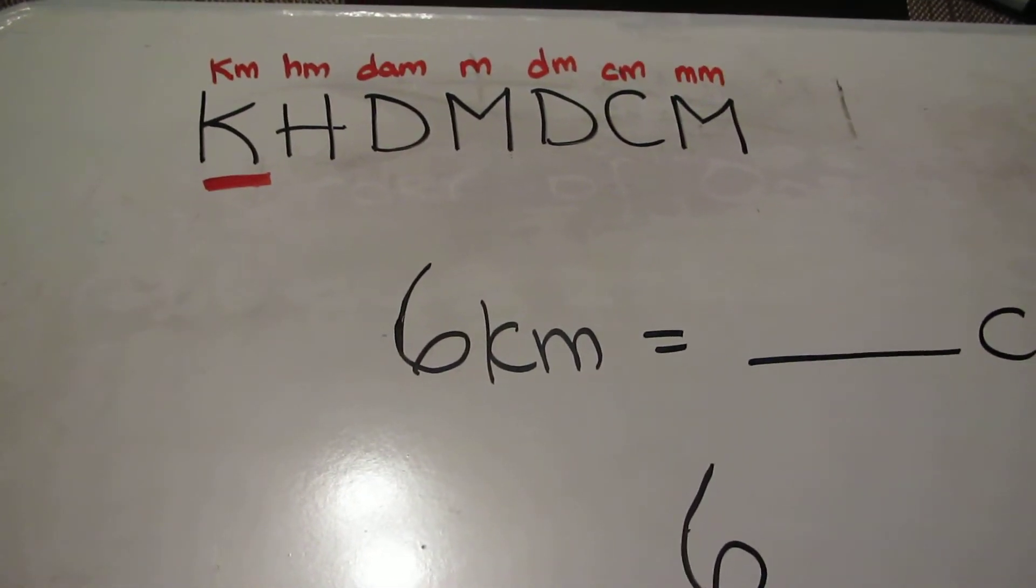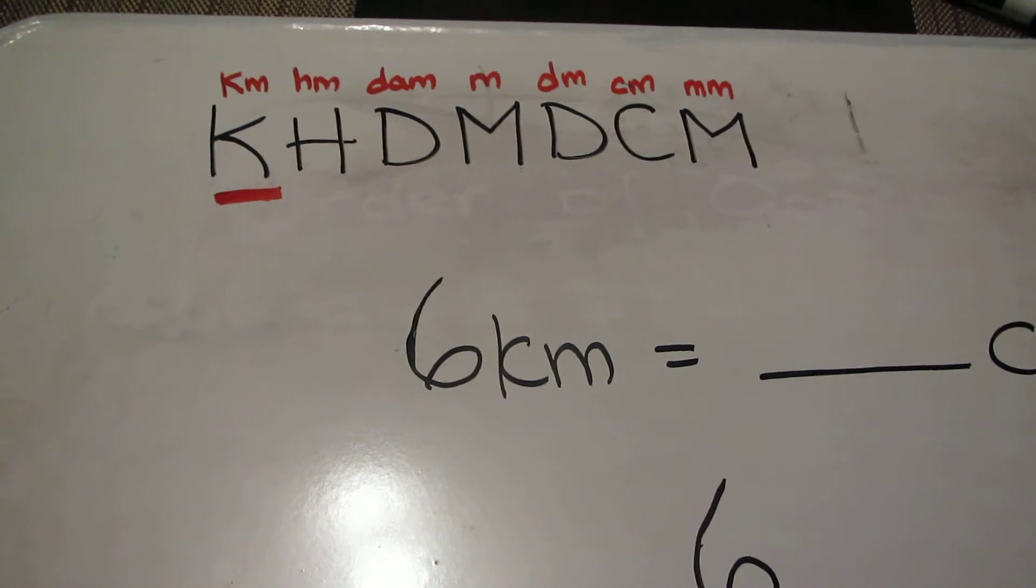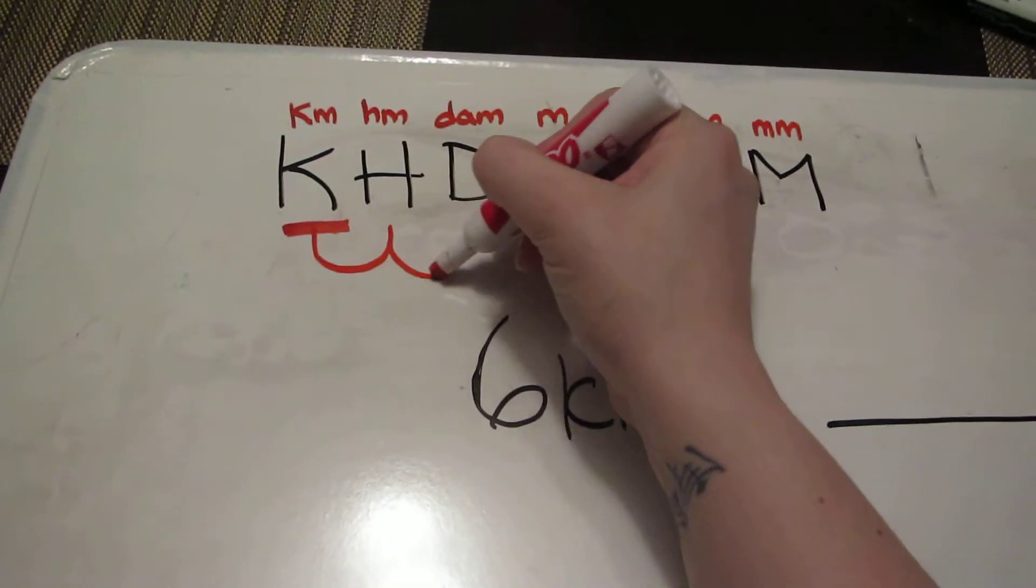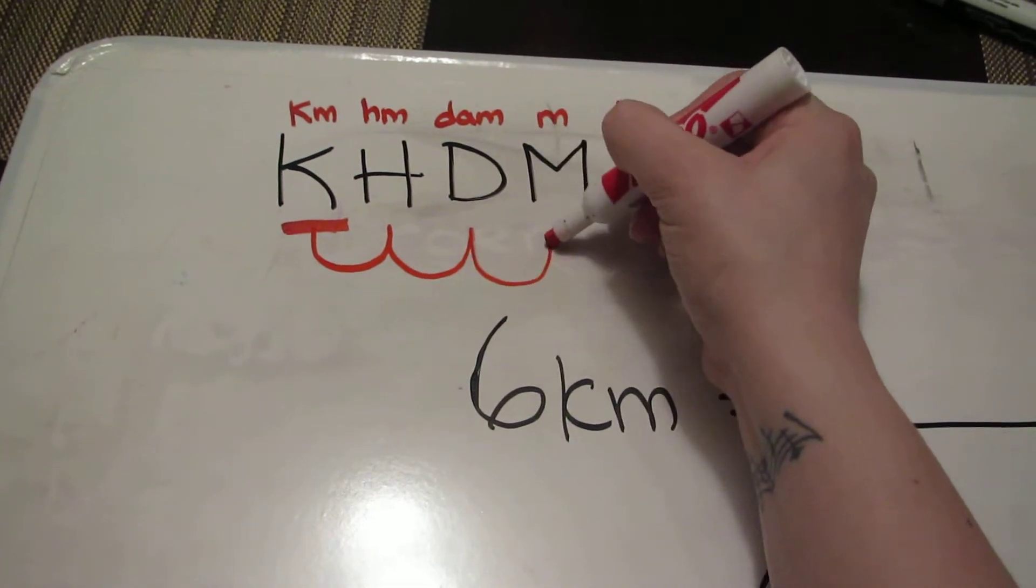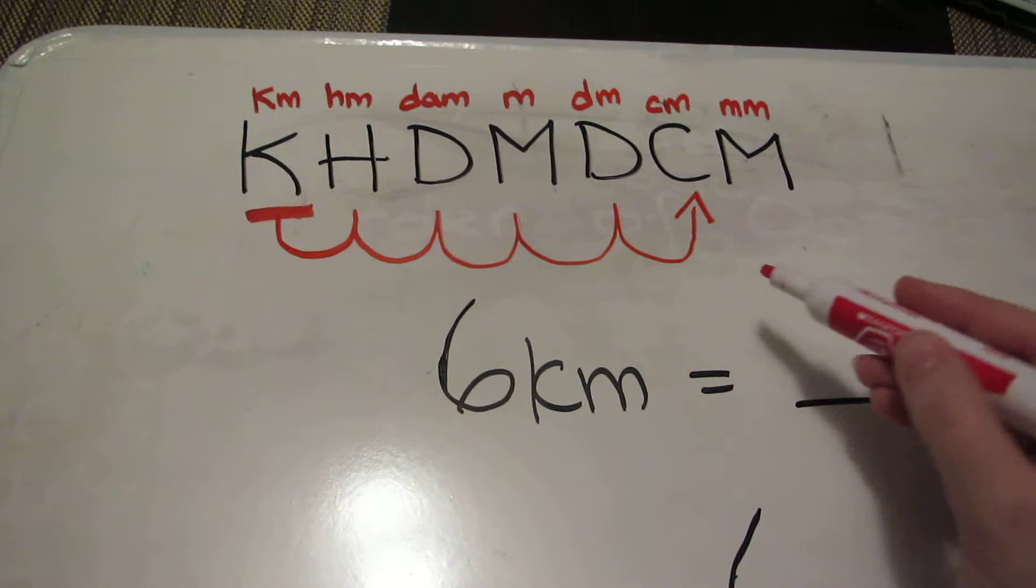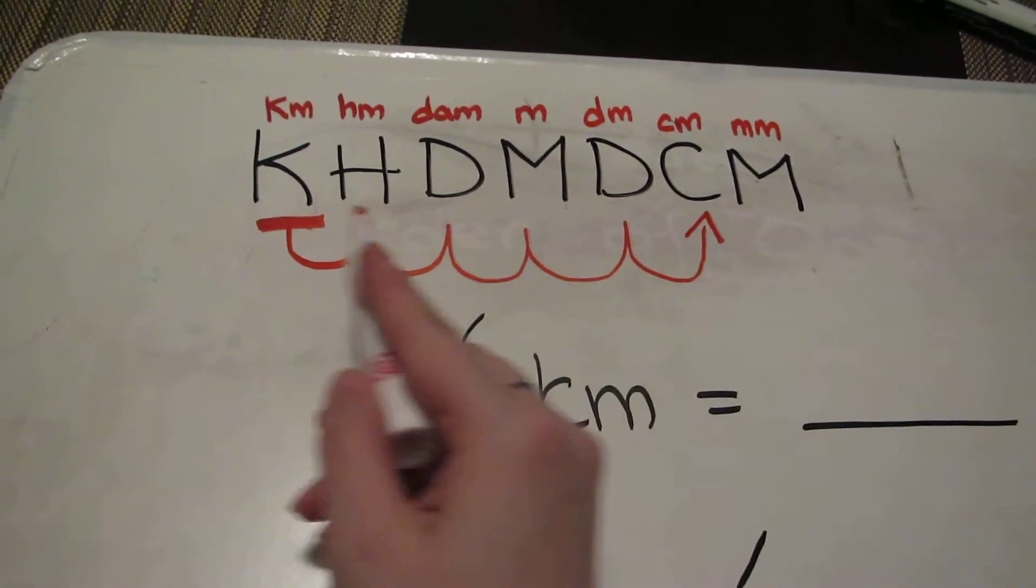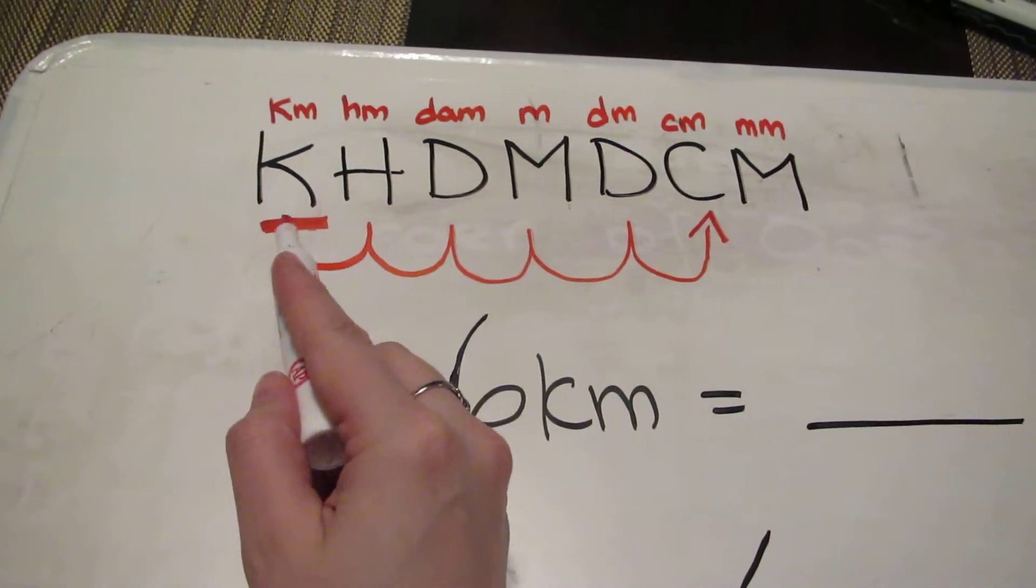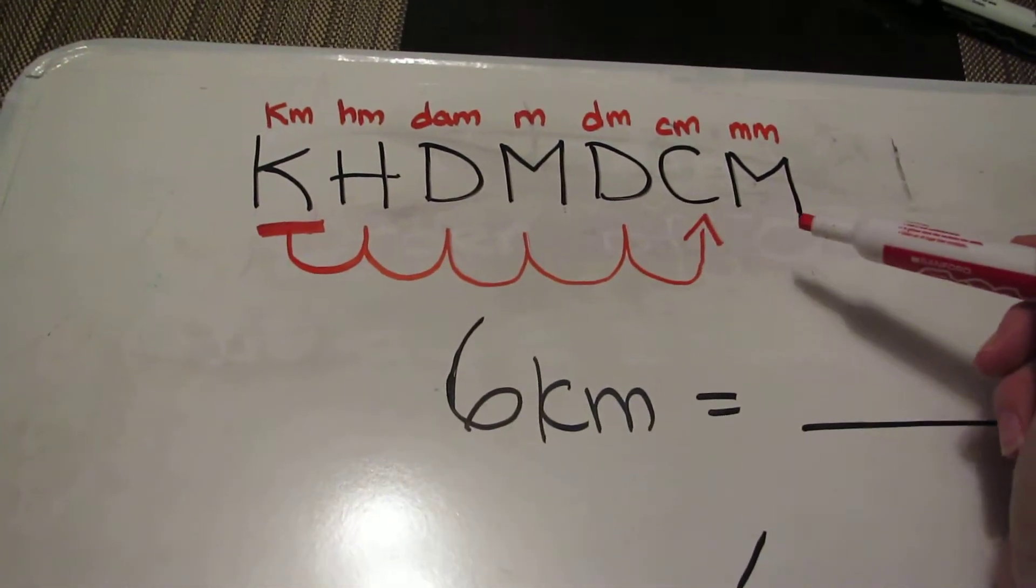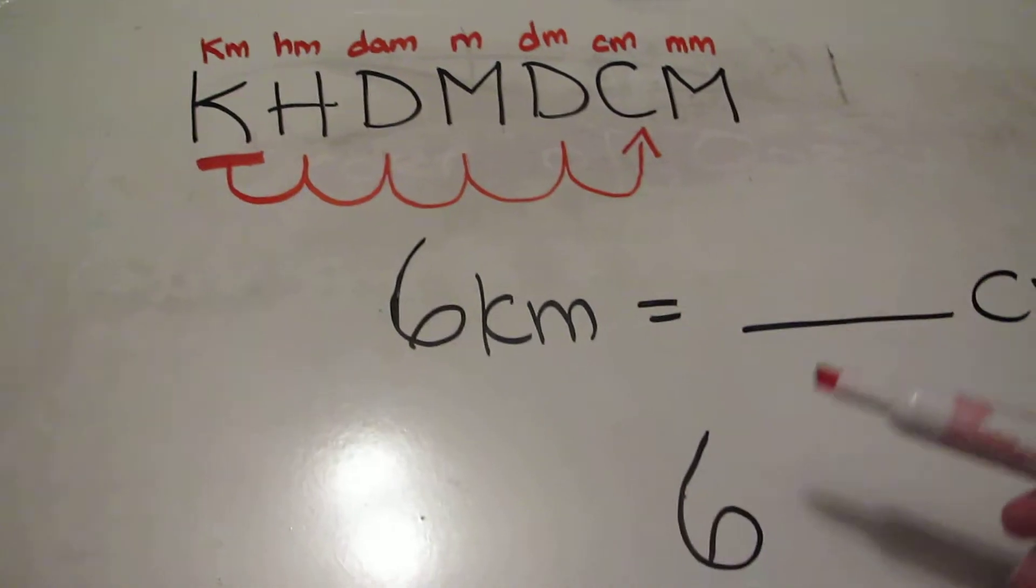So I count one, two, three, four, five. Five jumps to get to centimeters. Notice how I'm underlining where I'm starting and I'm very clearly marking where I'm going so I could see exactly how many jumps I have.